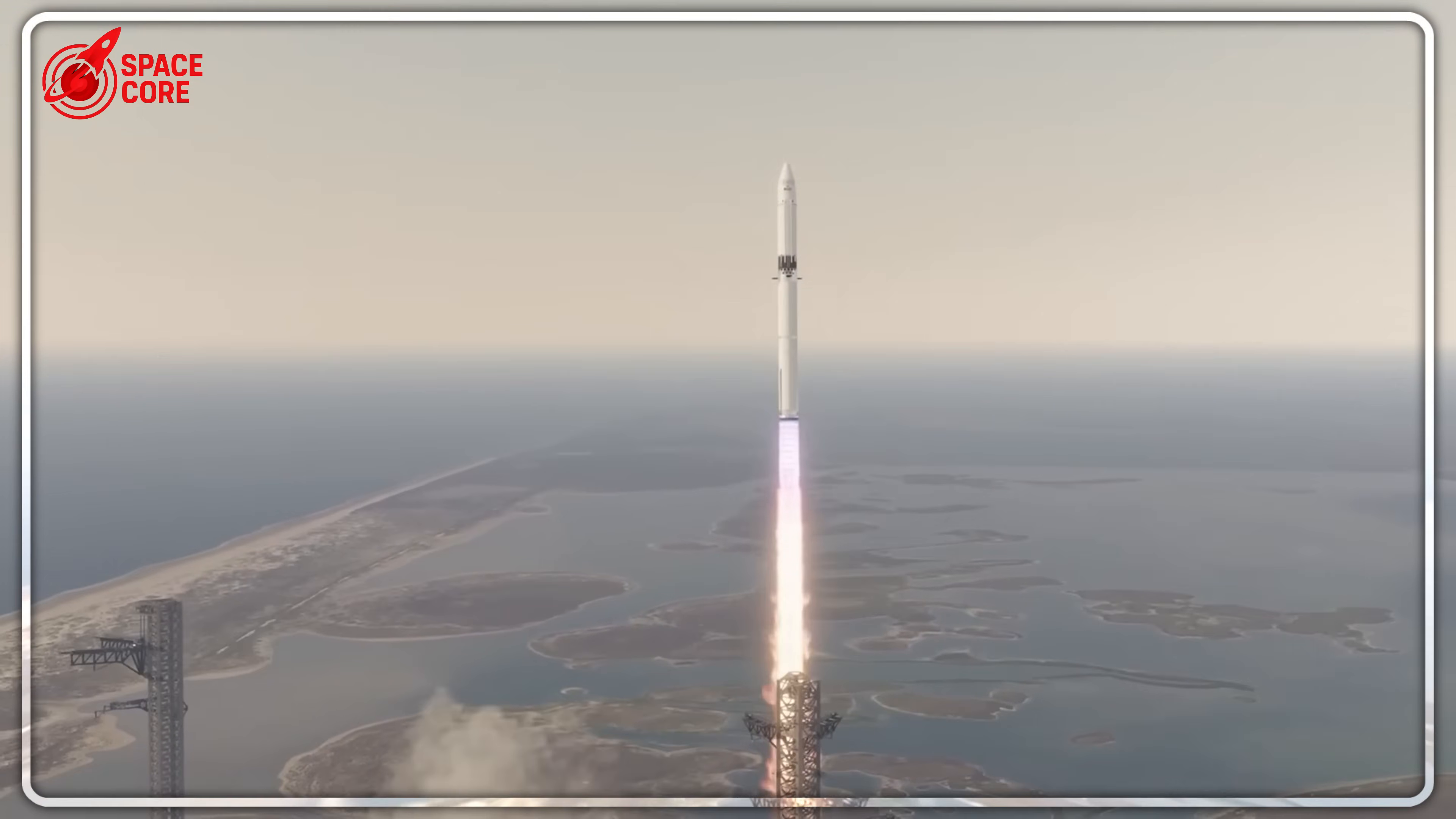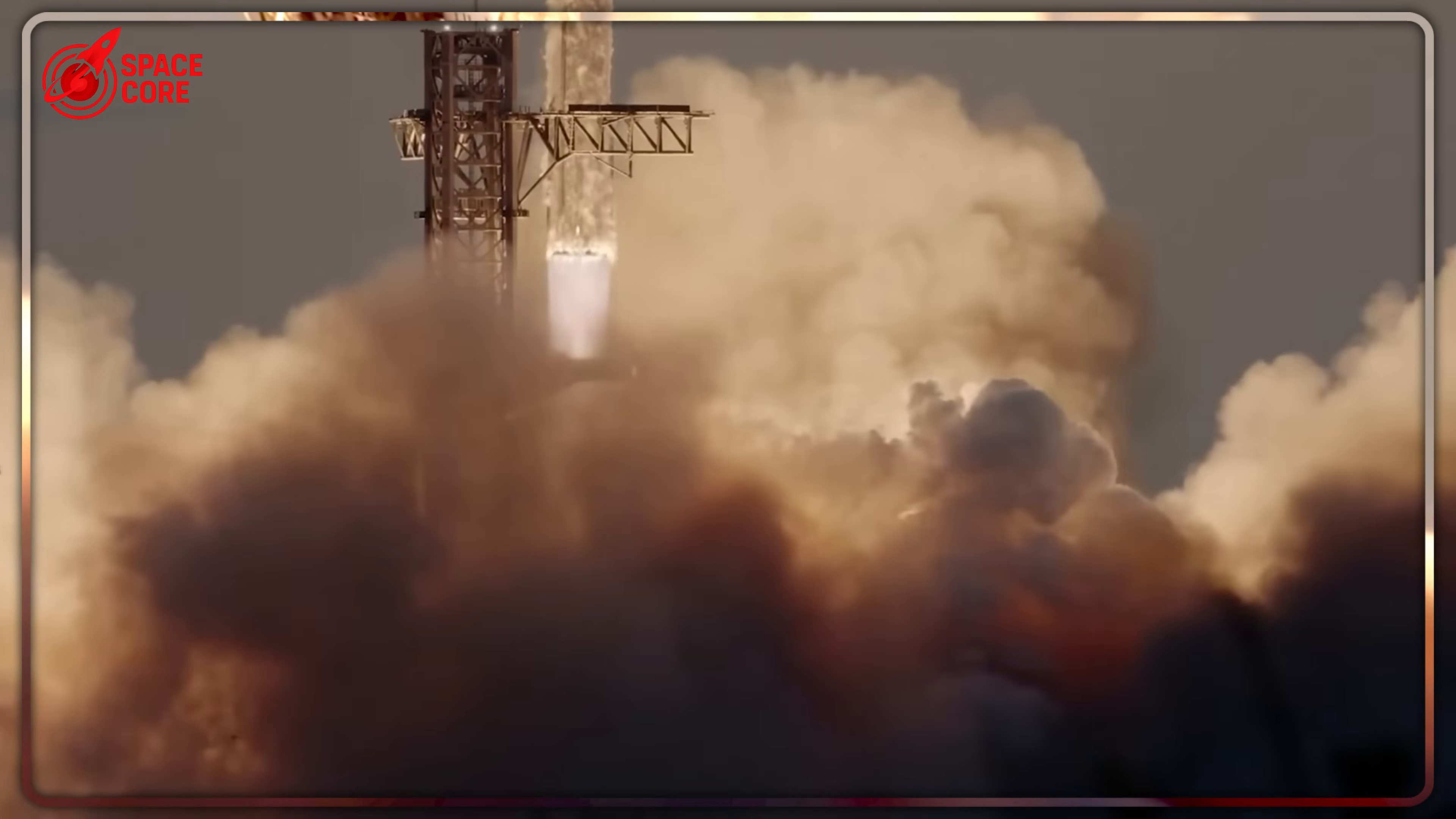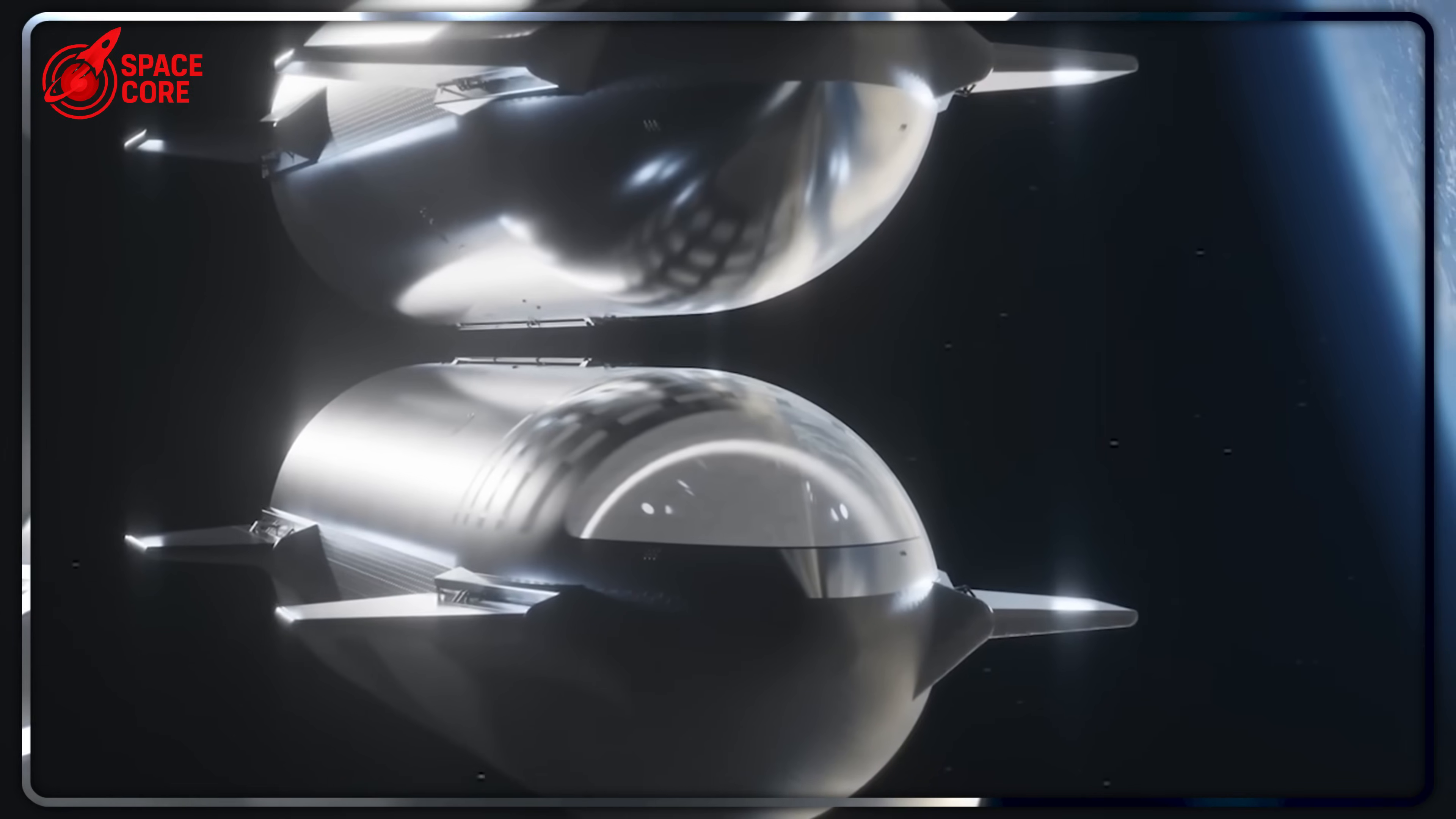While Blue Origin burns through billions, the rest of the space industry is moving on without them. NASA is quietly shifting lunar lander development to other companies. The Department of Defense is reconsidering their $3.4 billion contract. Amazon's Project Kuiper was supposed to launch on New Glenn rockets. Now they're buying launches from SpaceX. Jeff Bezos is literally paying his biggest competitor because his own rockets don't work. ULA's Vulcan rocket uses the exact same BE-4 engines, but they've completed three successful missions. How? They spent five years working with Blue Origin to fix the combustion instability before their first flight. Blue Origin is trying to skip that step.